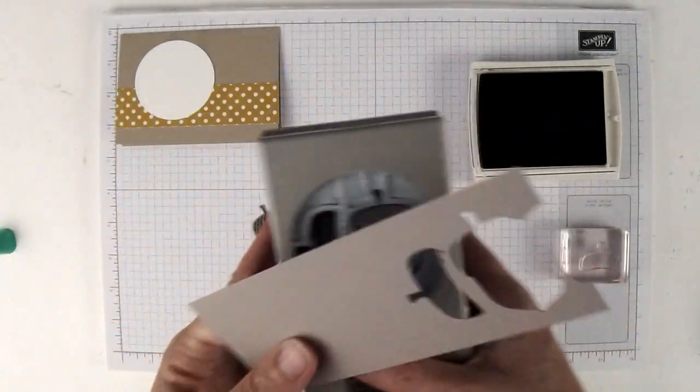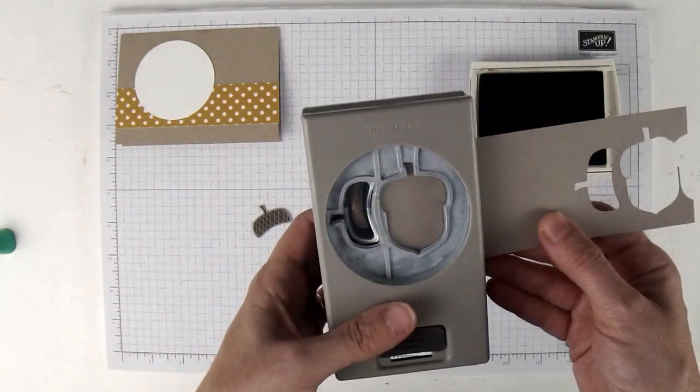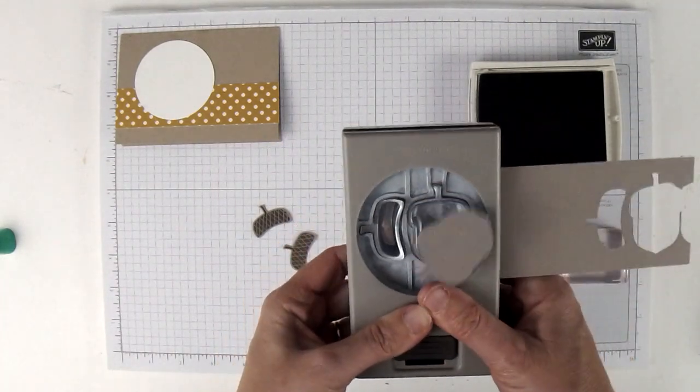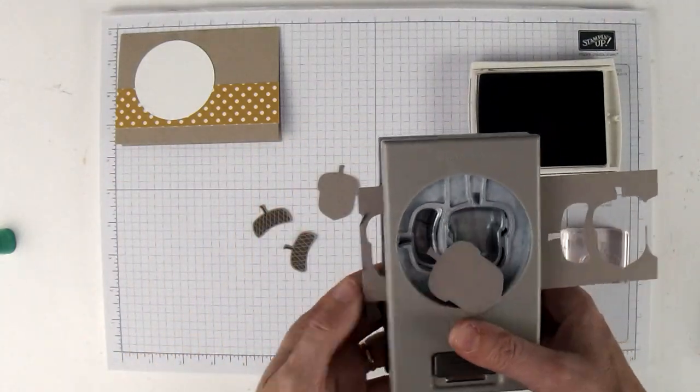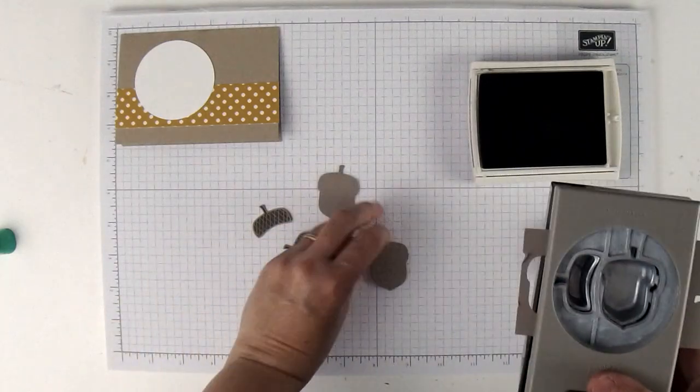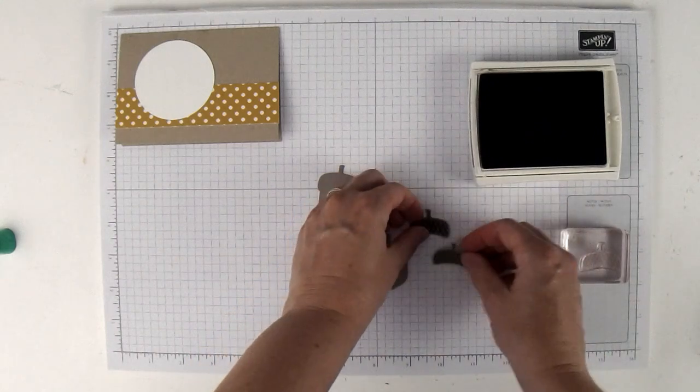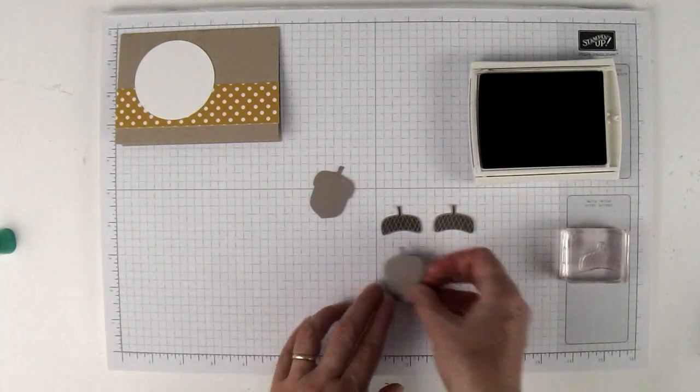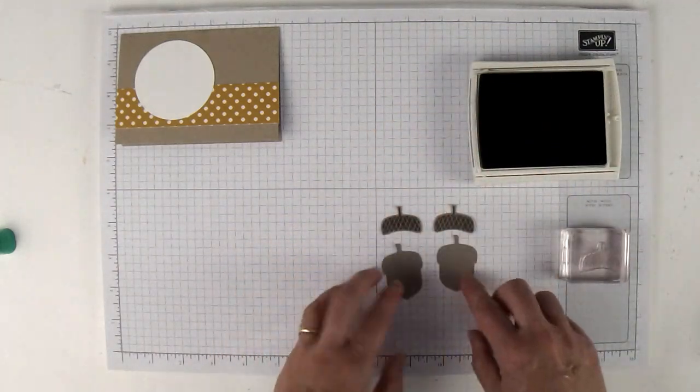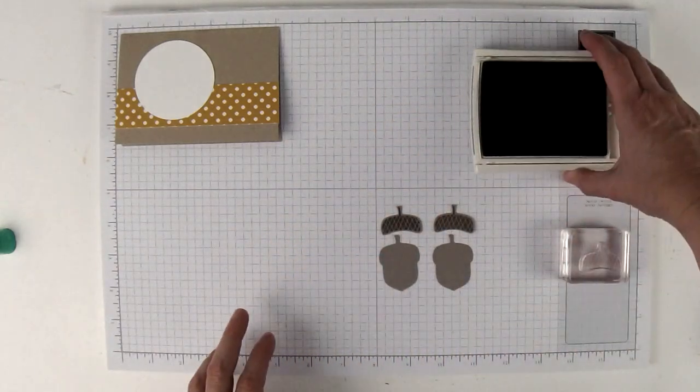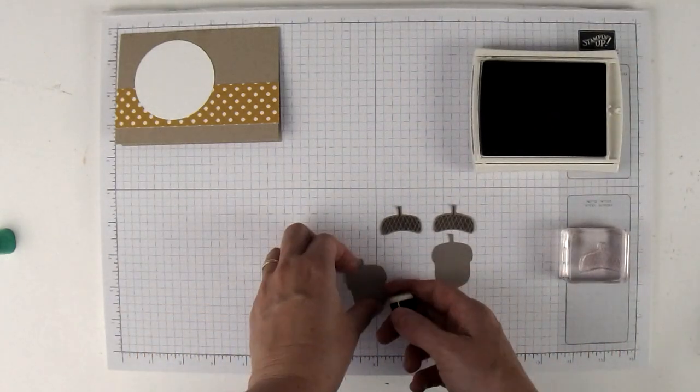I need two whole acorns and I'm not even going to stamp this. I'm just going to punch once and twice to make two whole acorns. Make sure that your acorn has a little bit of a bend toward one side and make sure those are going to match up.